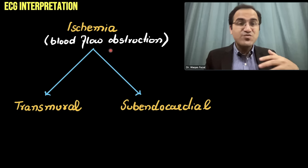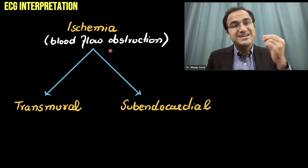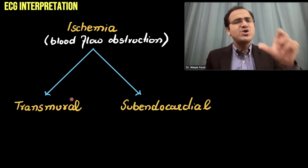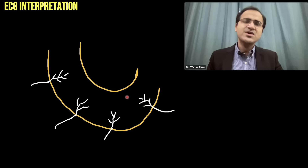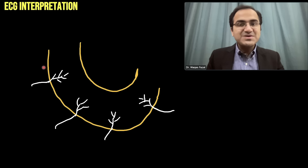Ischemia means blood flow obstruction. Whenever there is blood flow obstruction to the heart muscle, there are two types of ischemia: transmural ischemia, in which the whole thickness of the wall of the heart is affected, or subendocardial ischemia, in which the inner layer of the heart is affected.